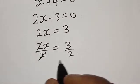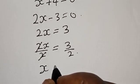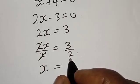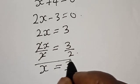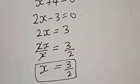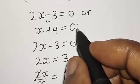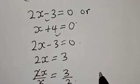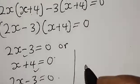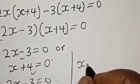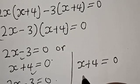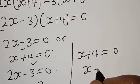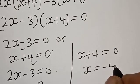This cancels out. Our x equals 3/2. That is the first value of x. Then also from here, we have x + 4 equals 0. Then x equals -4.